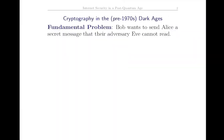First, a quick run-through about cryptography. In the dark ages, which is what cryptographers call the pre-1970s, the basic problem is the two protagonists, Bob and Alice, want to exchange secret information. Say Bob wants to send a message to Alice that their adversary Eve, the eavesdropper, cannot read.